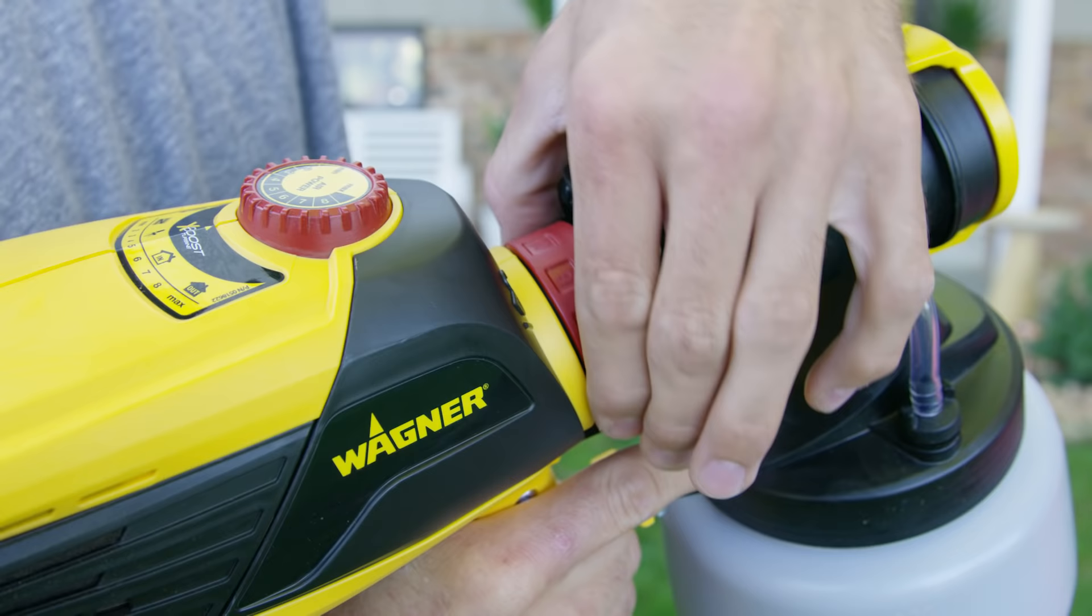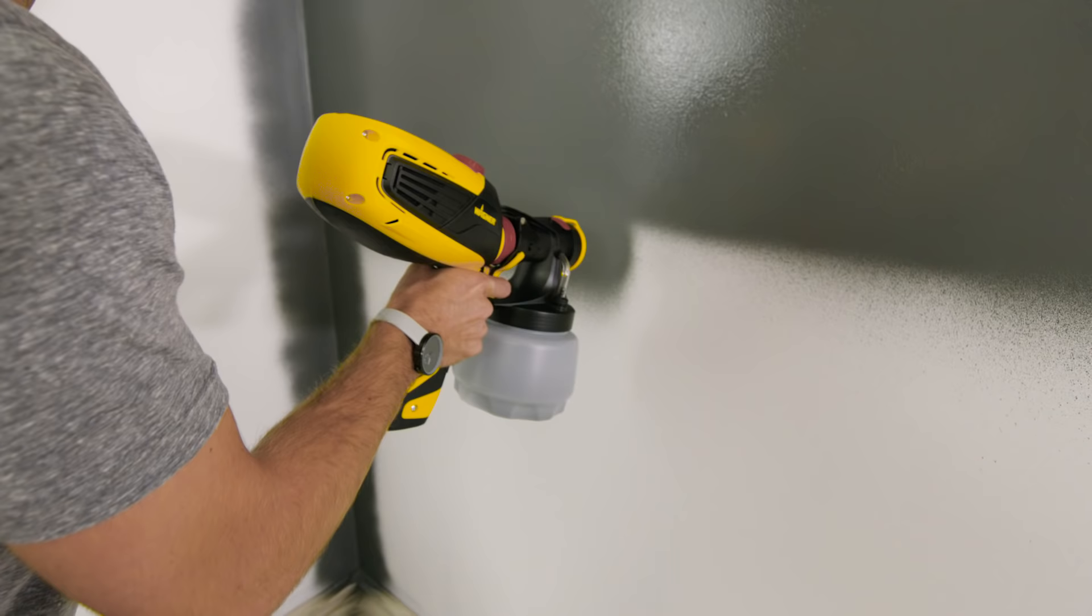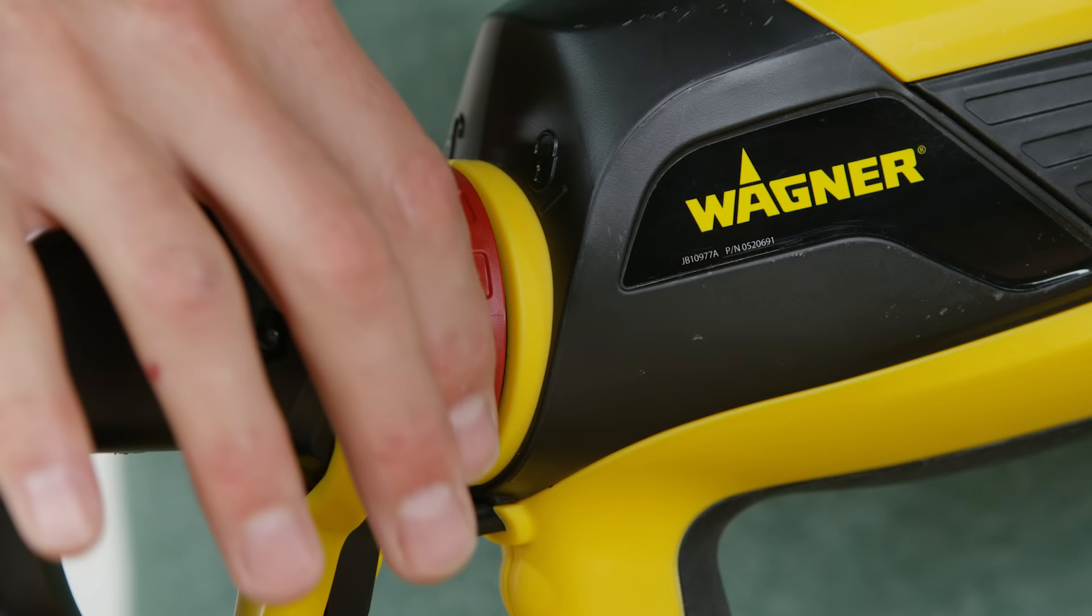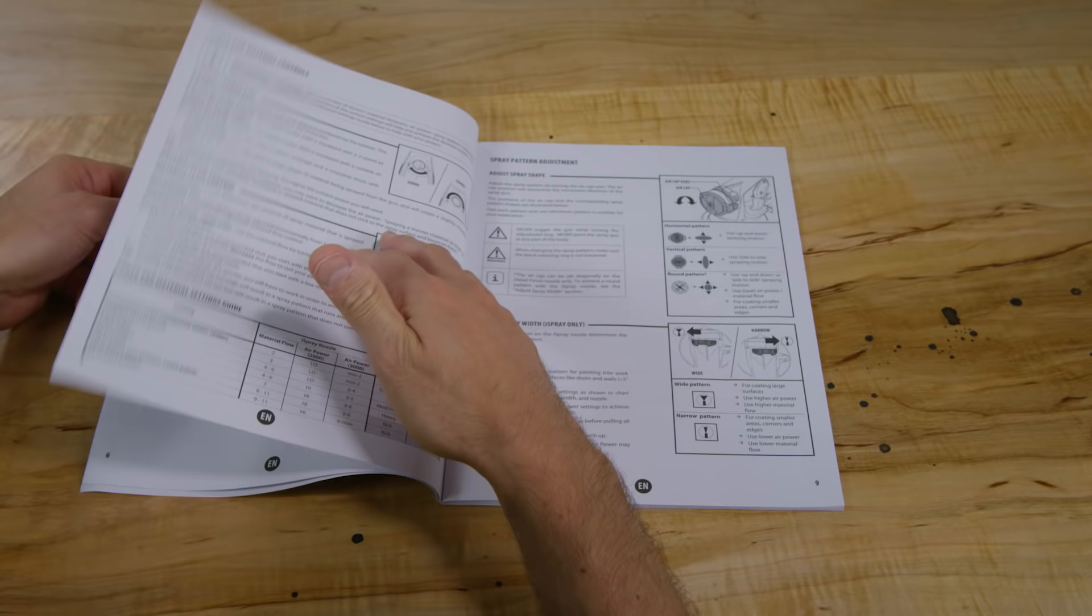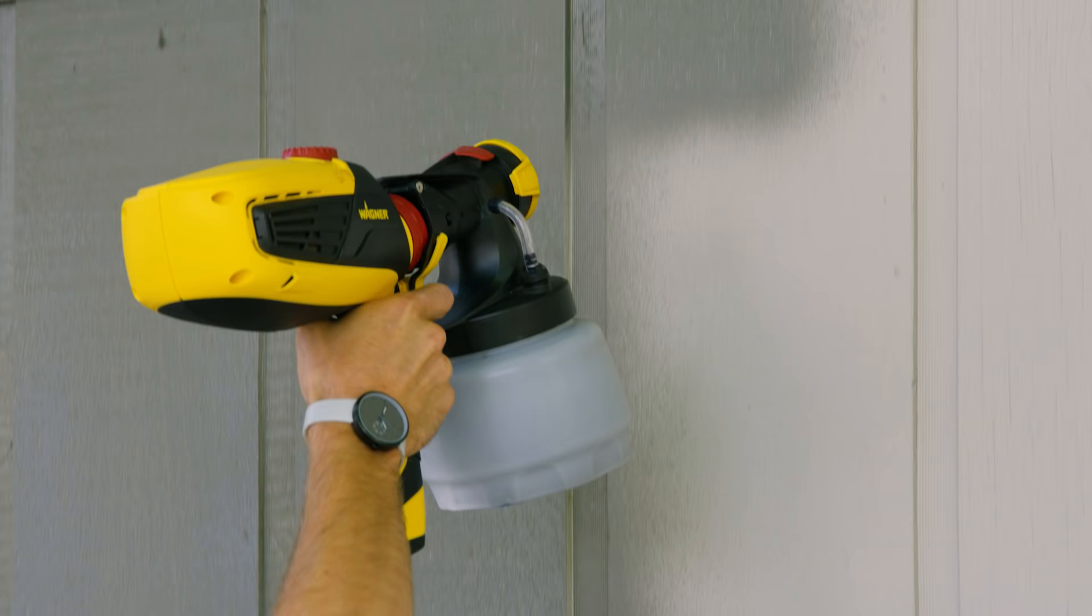The material flow control changes the amount of paint or stain coming out of the nozzle. It's better to start low, then increase when you want to go faster. Refer to the power and material setting guide section in the owner's manual for more details.